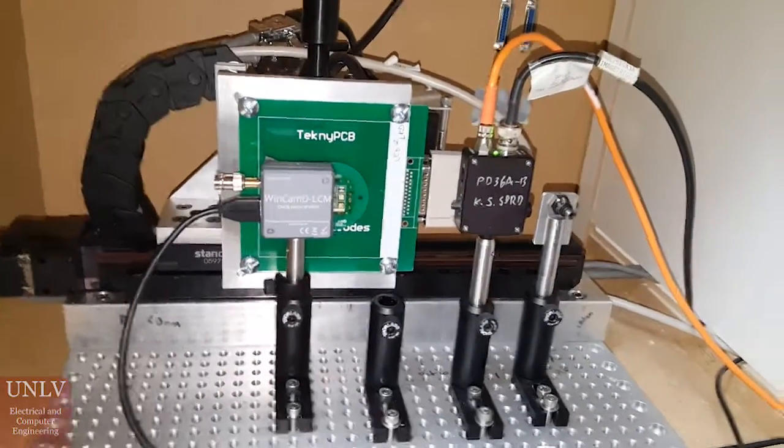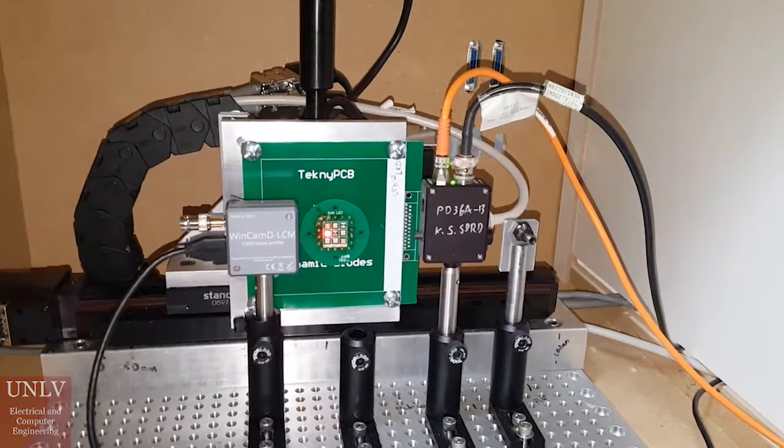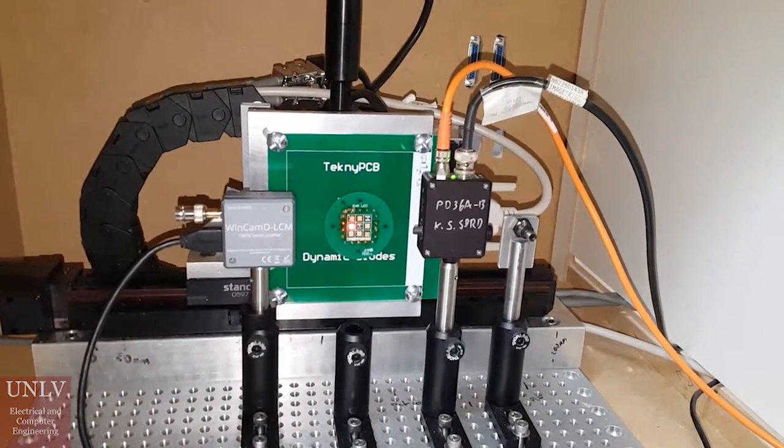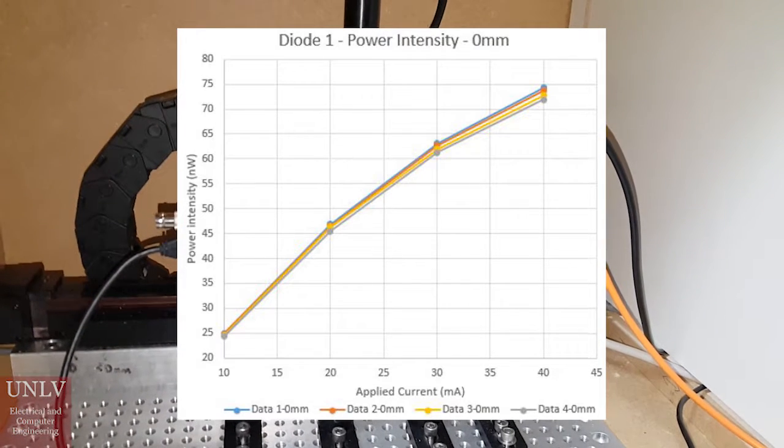The power intensity test measures the maximum power of the output light of the LED at different current rates. This can determine if the diode can be used for electro-optical applications.